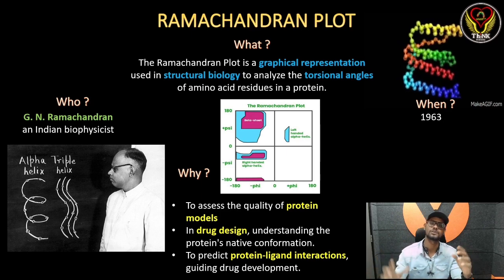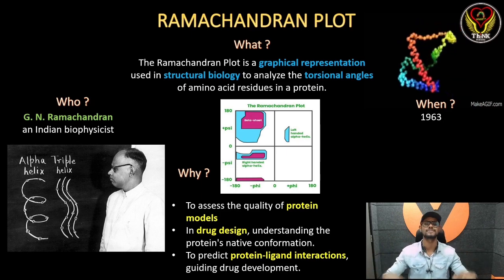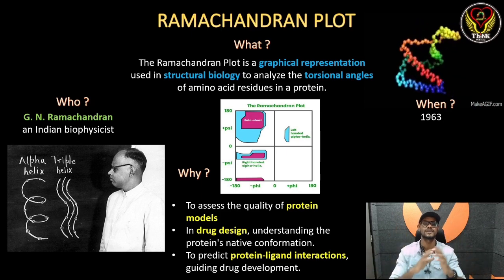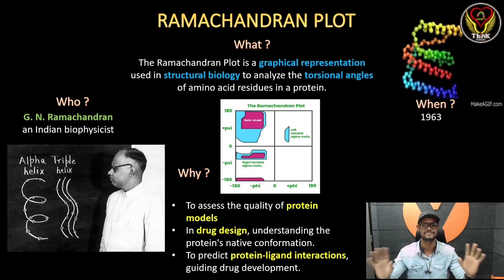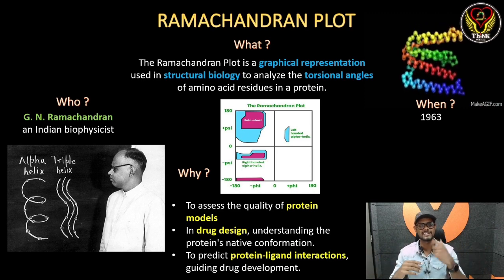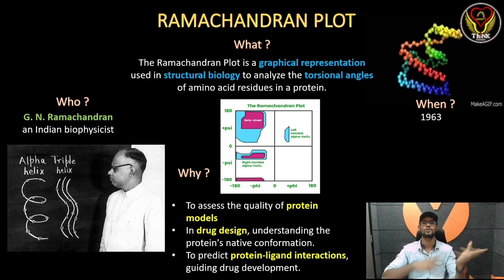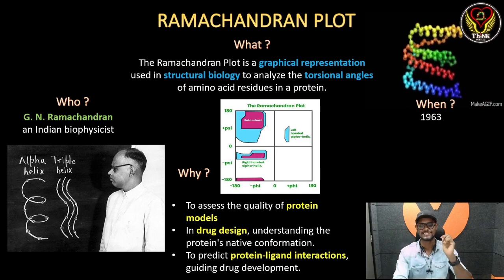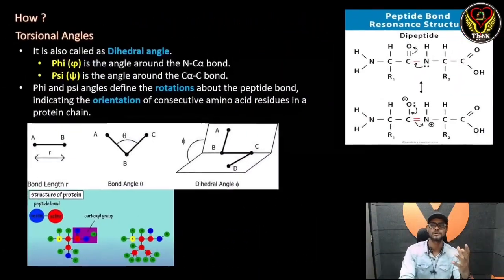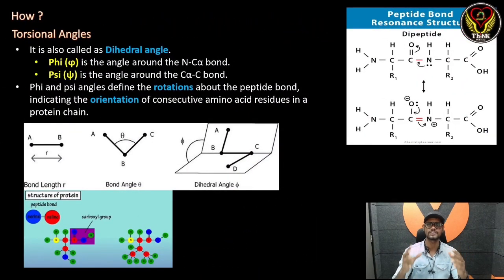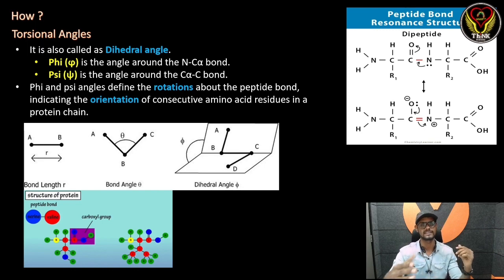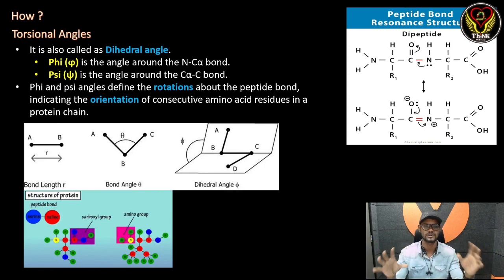If you say, the protein is a structure — this is the Ramachandran Plot. It is a graphical representation. What does it teach? Torsional angles. So this is an overview. If you understand this, you will see the torsional angle. This concept is clear. If you understand the whole Ramachandran Plot, it will be easy to understand.